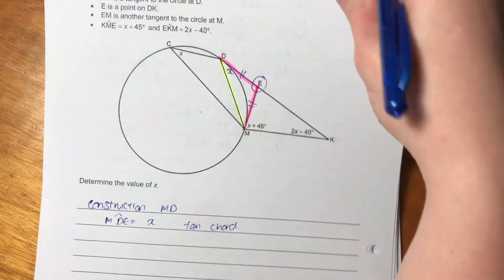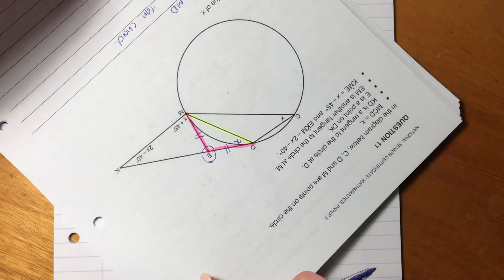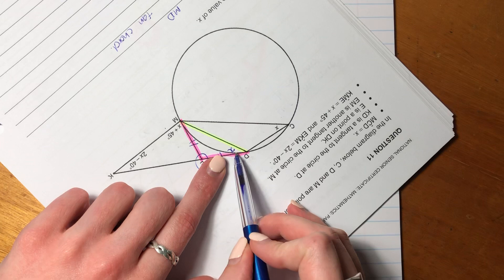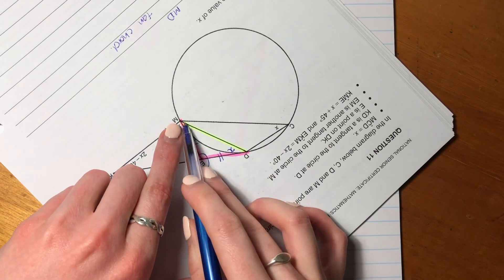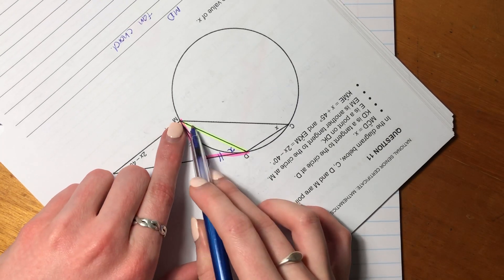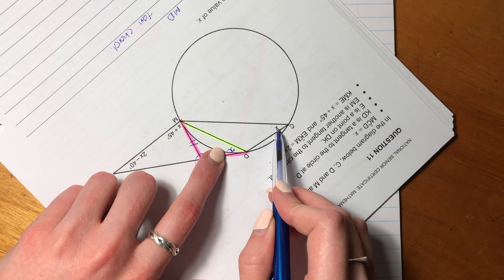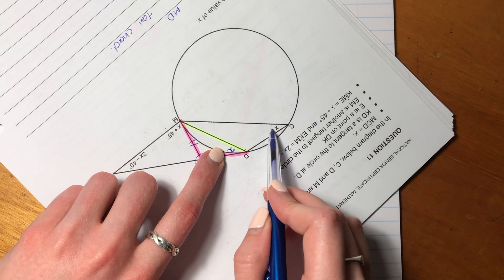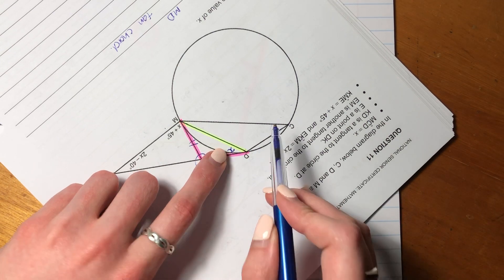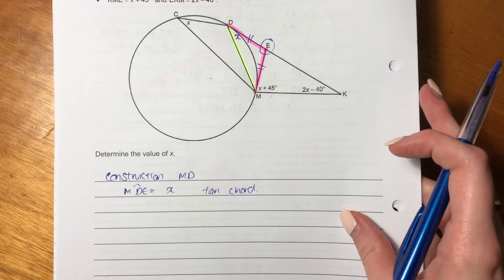Now you could be saying, well, why is that? Well, do a little bit of a flipperoo, and you'll see that this is tan chord. Because I've drawn this in here, this is a tangent. This X will equal that X over there, or this angle will equal that angle, both will be X, because of tan chord. So we have tan chord there.